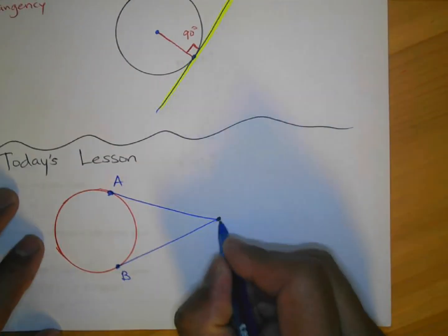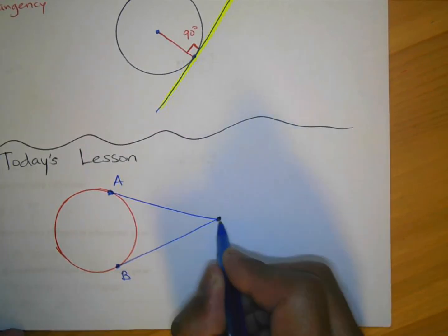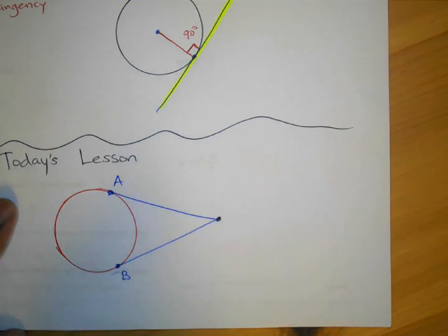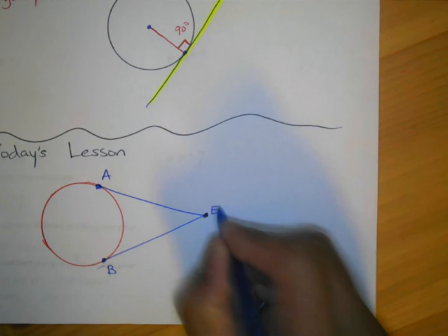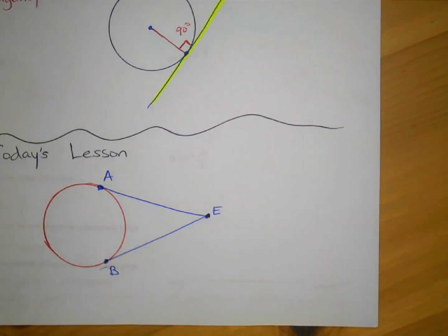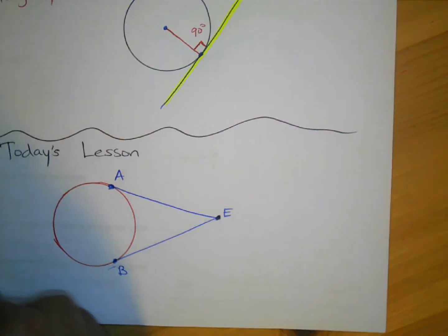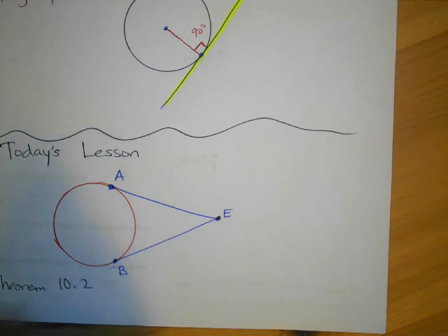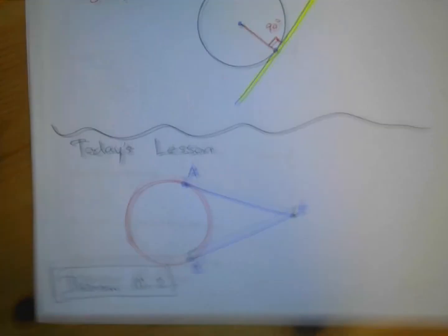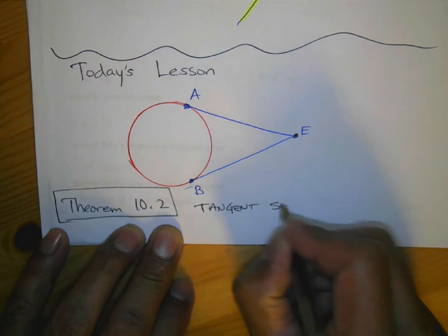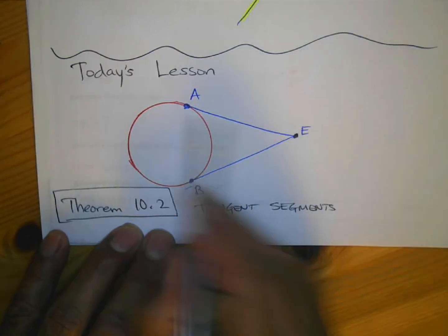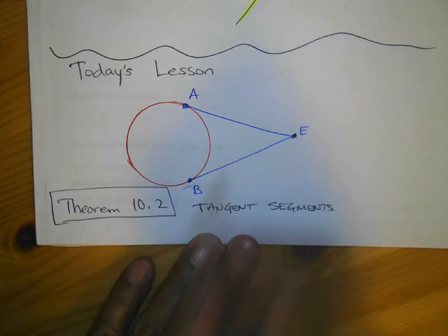If two segments are coming from a point outside the circle and they are each tangent to the circle, these are called tangent segments. In this case AE is a tangent segment and BE is a tangent segment — a segment being a line from a common external point.